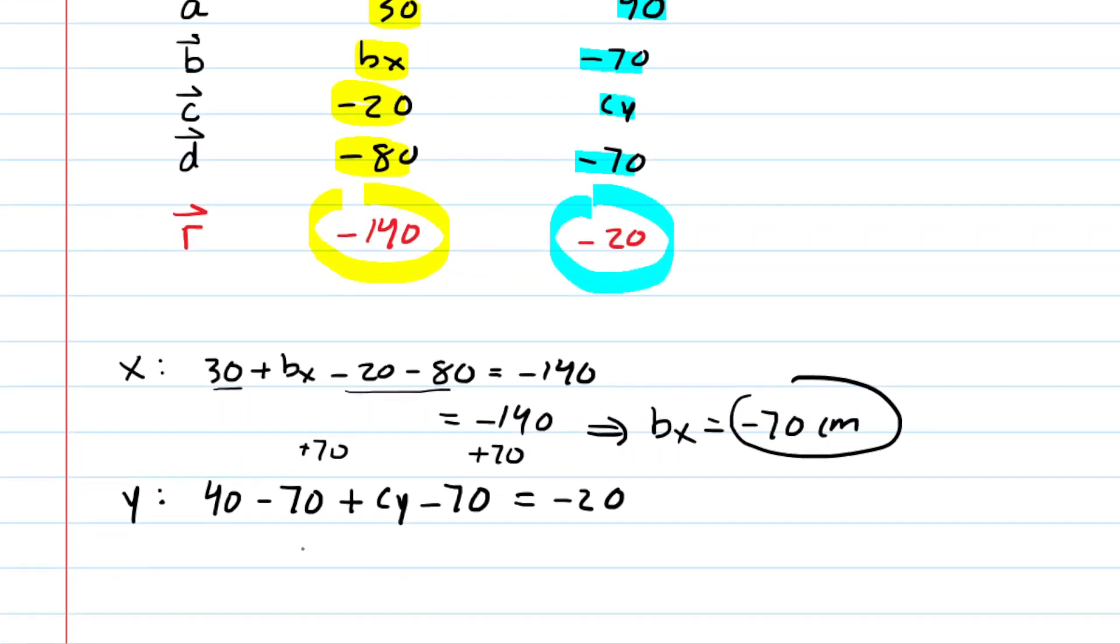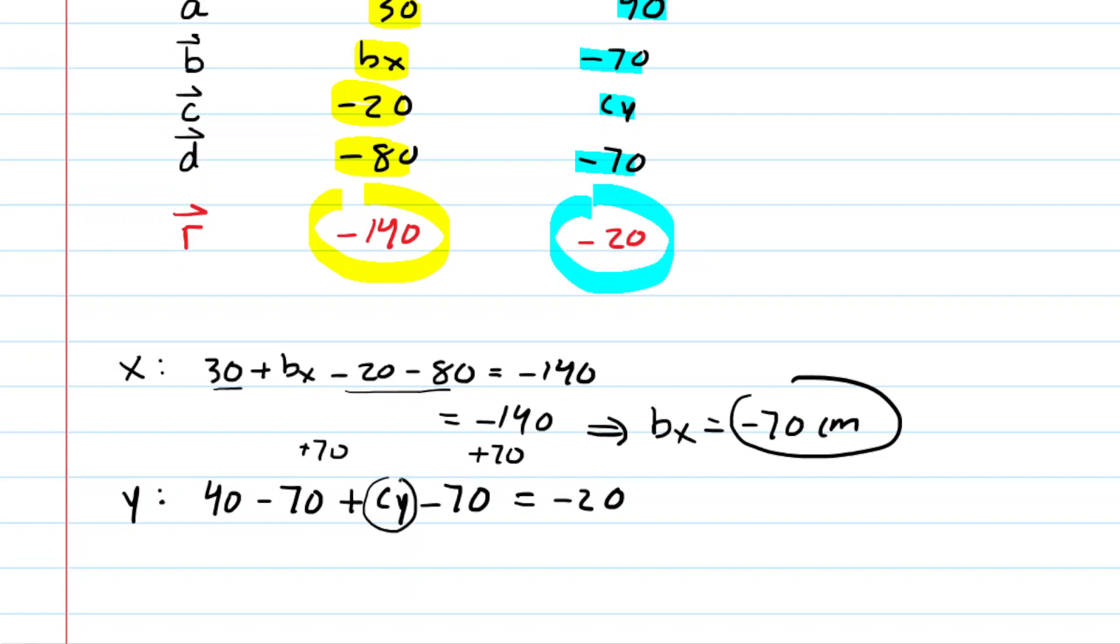Similarly, we can use the second equation to solve for CY. We combine 40 minus 70 minus 70, we get negative 100 plus CY equals negative 20, and then just add 100 to both sides. And you can see that C sub Y equals positive 80 centimeters. That's the correct answer to part B.